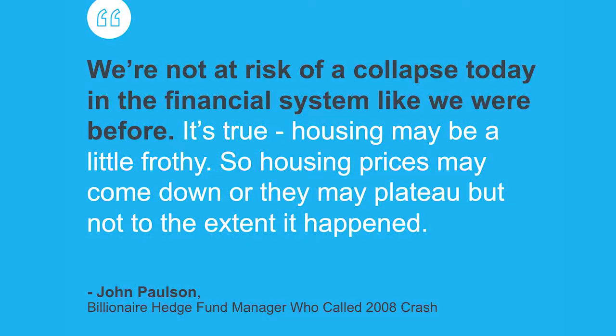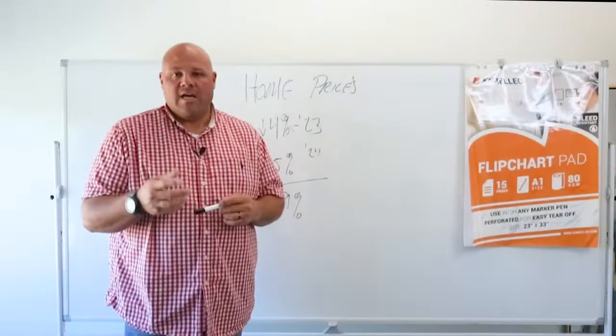I'm going to read you a quote that was from John Paulson. John is a billionaire hedge fund manager. This is what John said about the market: We're not at risk of a collapse today in the financial system like we were before. It's true. Housing may be a little frothy, so housing prices may come down or they may plateau, but not to the extent that it happened before. And I close that quote.